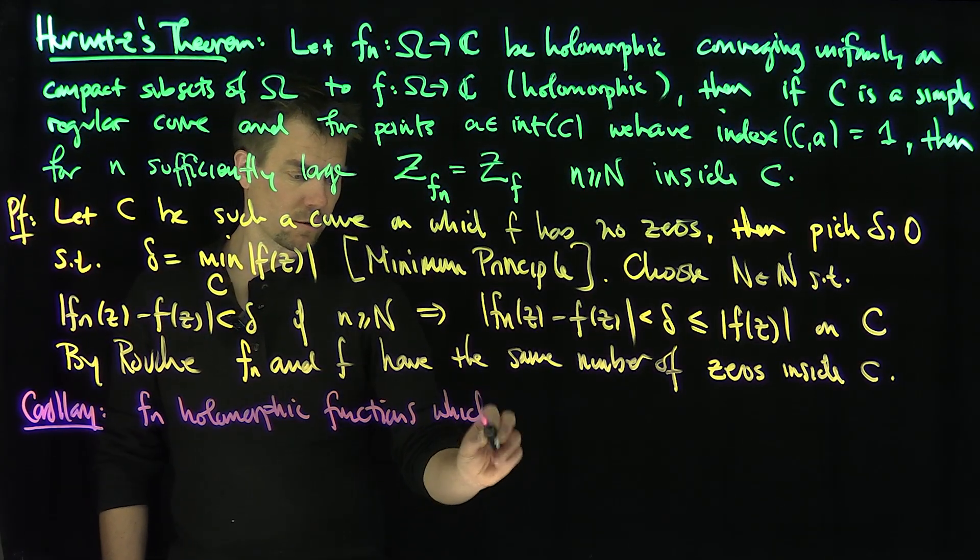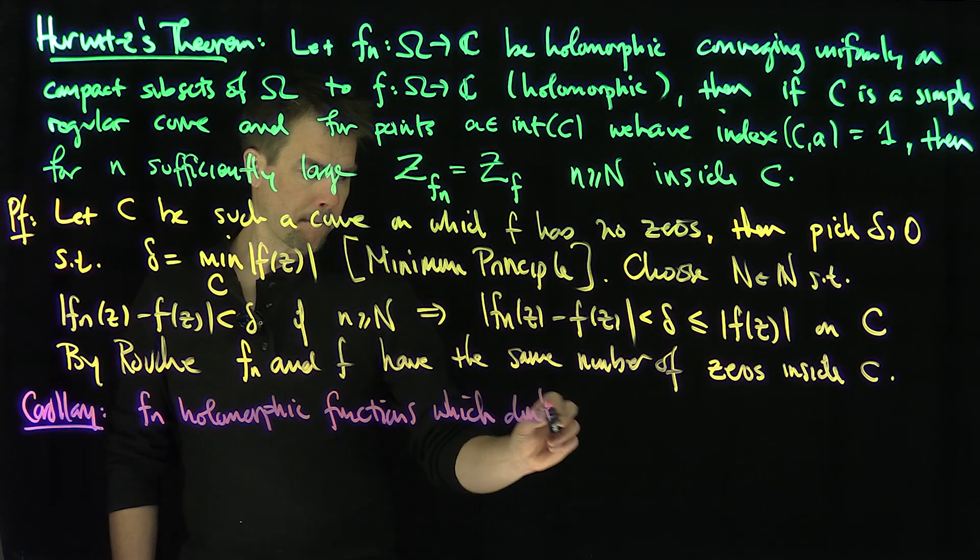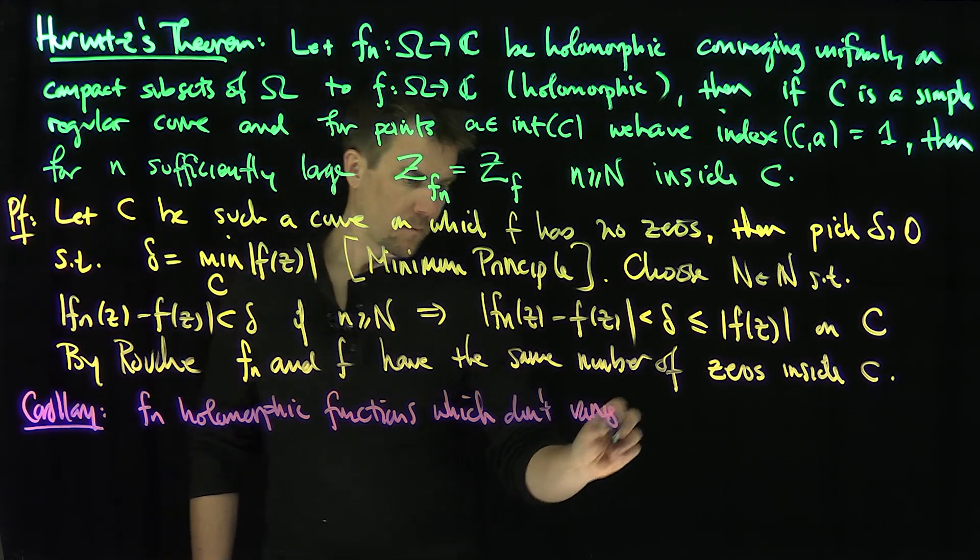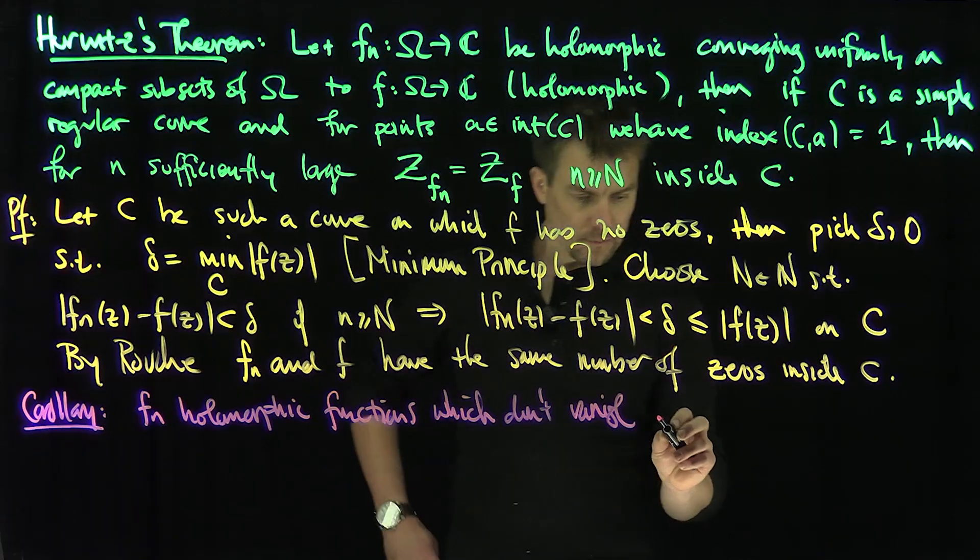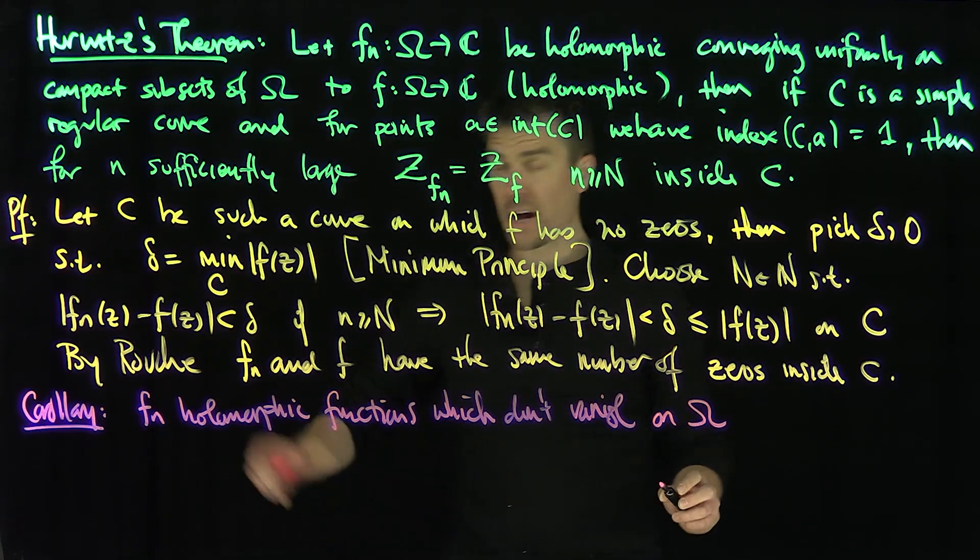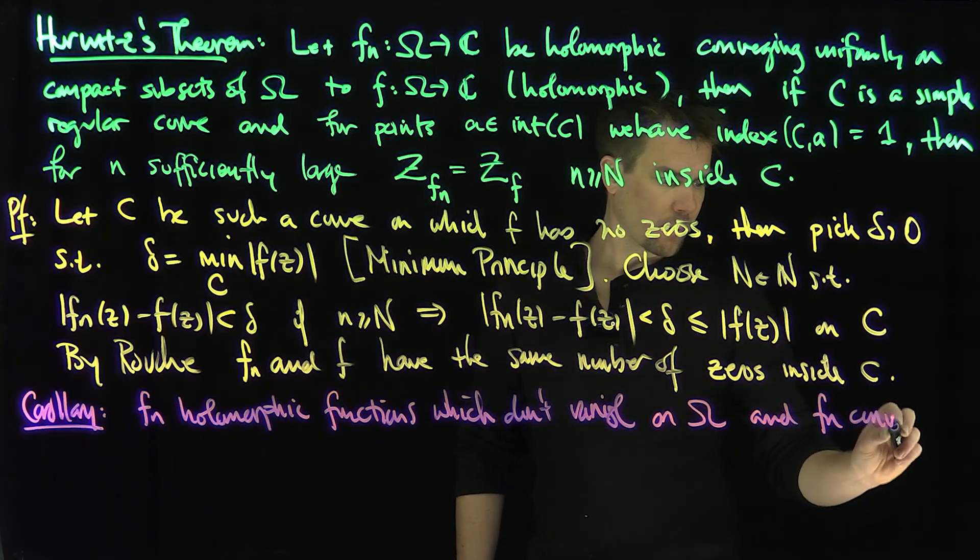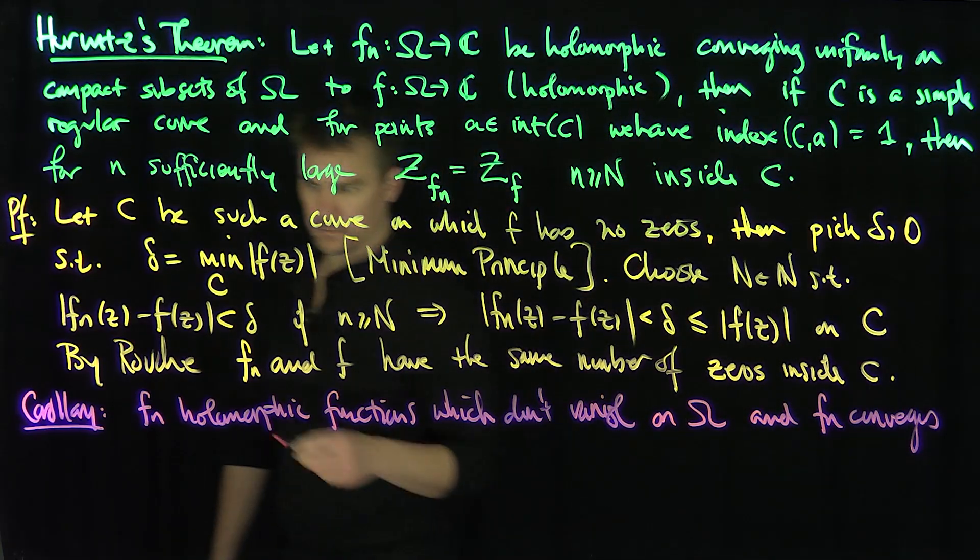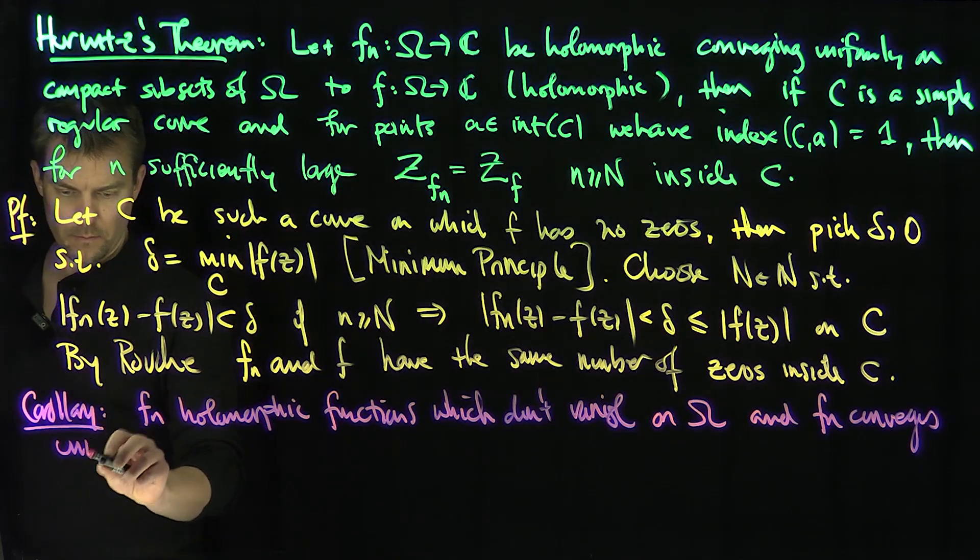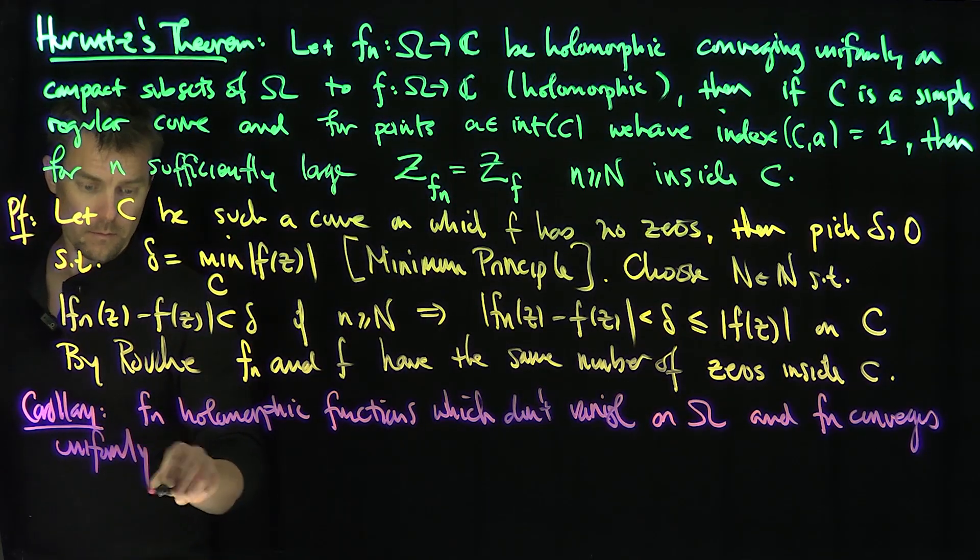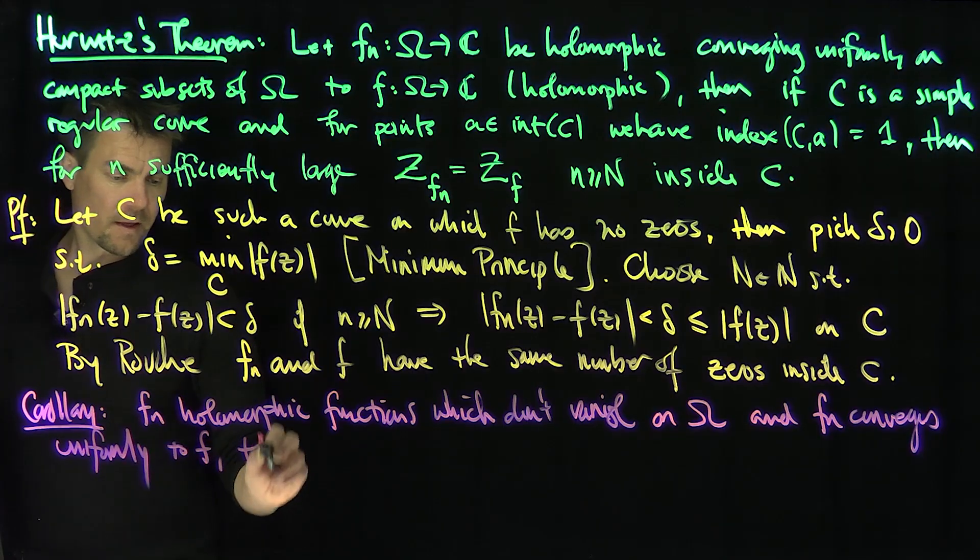which don't vanish on omega, so I give you some non-vanishing holomorphic functions, and fn converges uniformly to f, then either